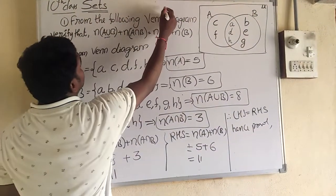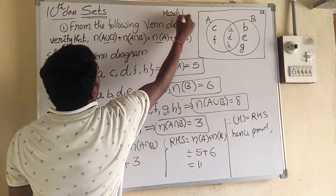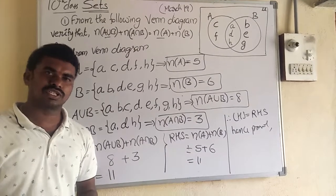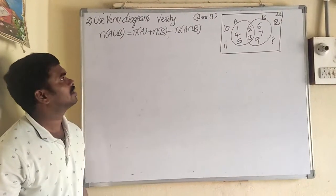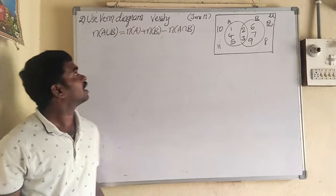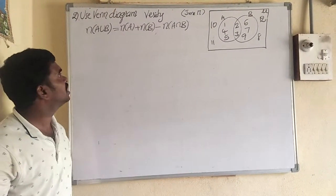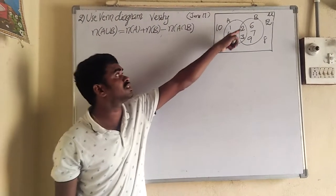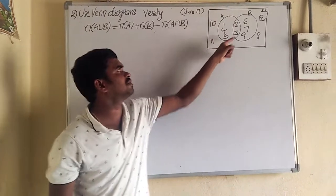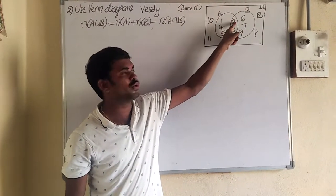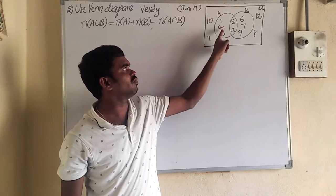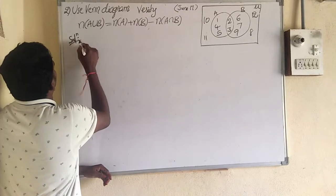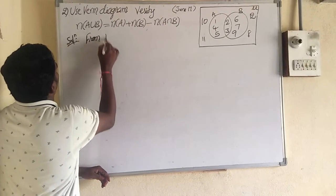This is the solution of the given question from March 2019. This question was given for four marks questions in the last academic year. Second question: a Venn diagram is given and we have to prove that N of A union B equals N of A plus N of B minus N of A intersection B.